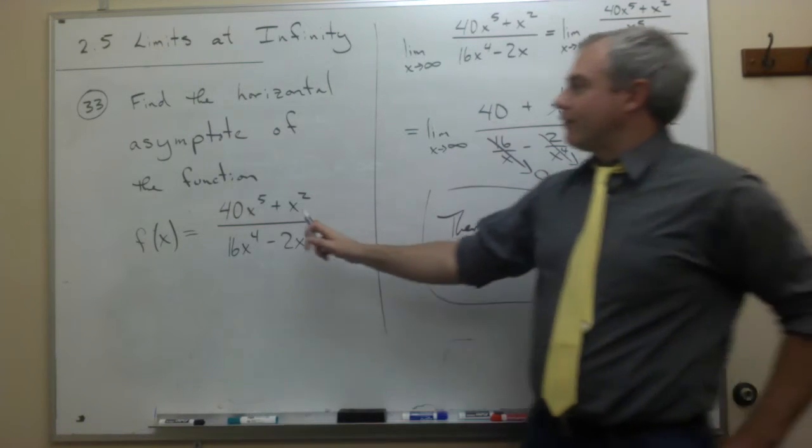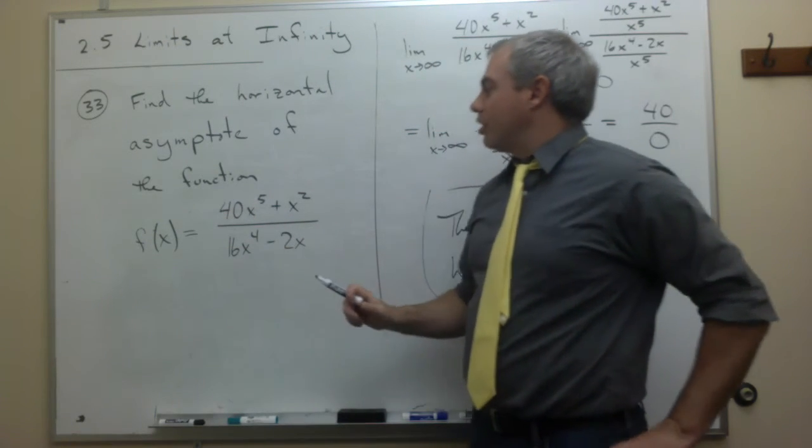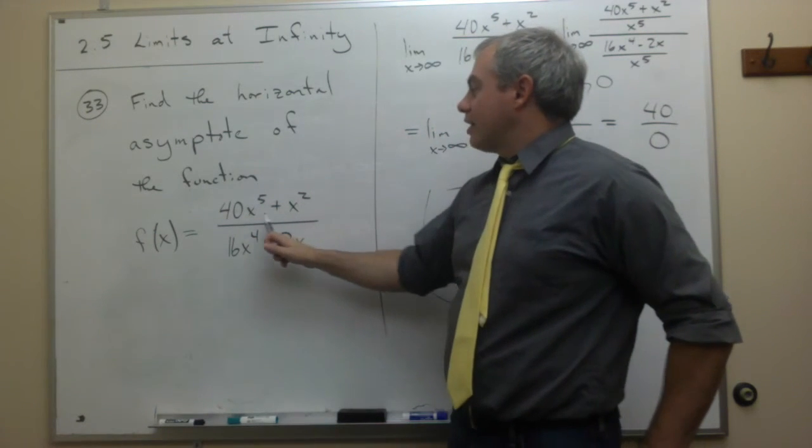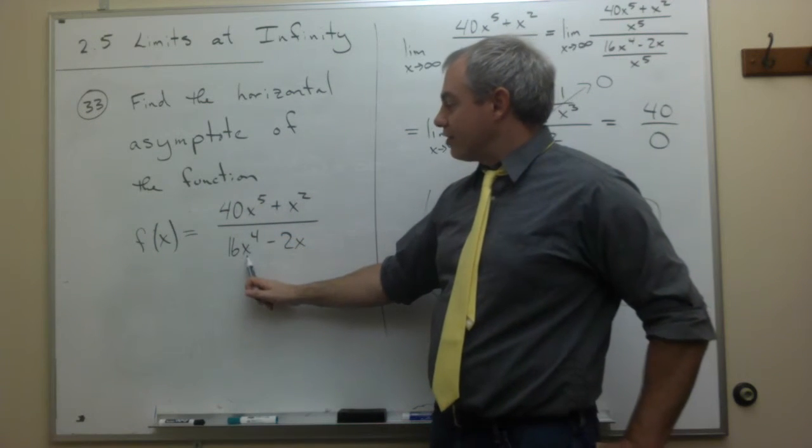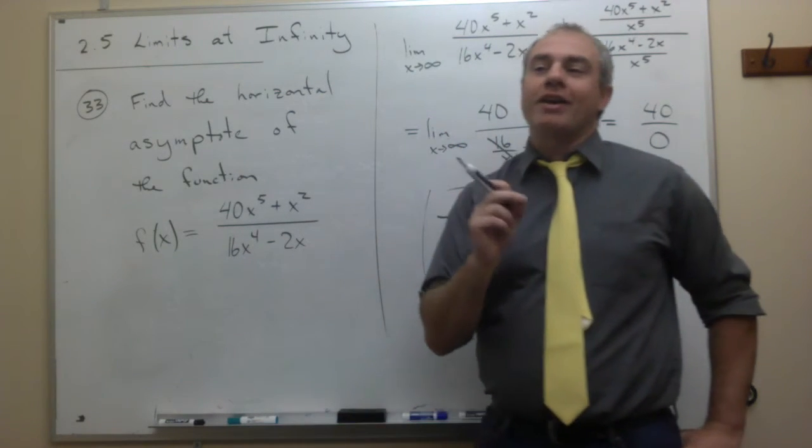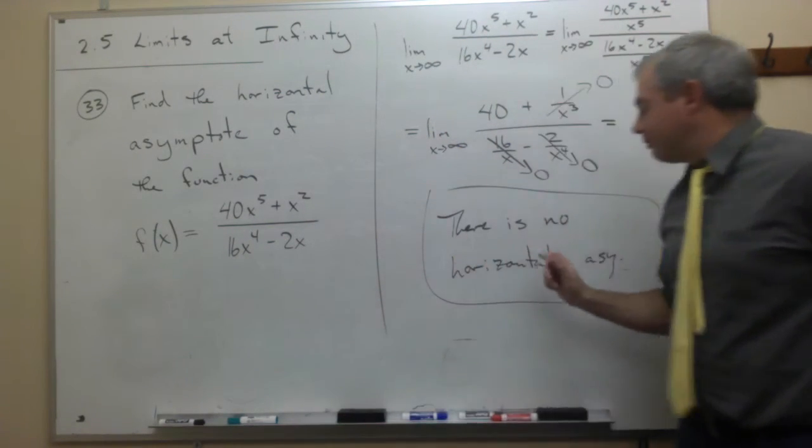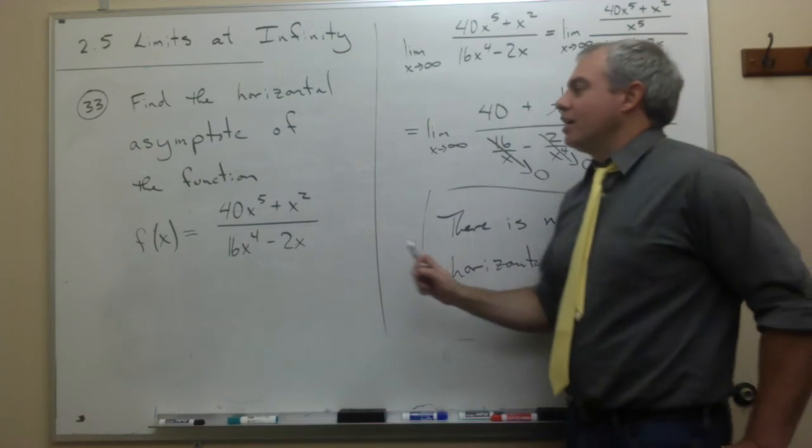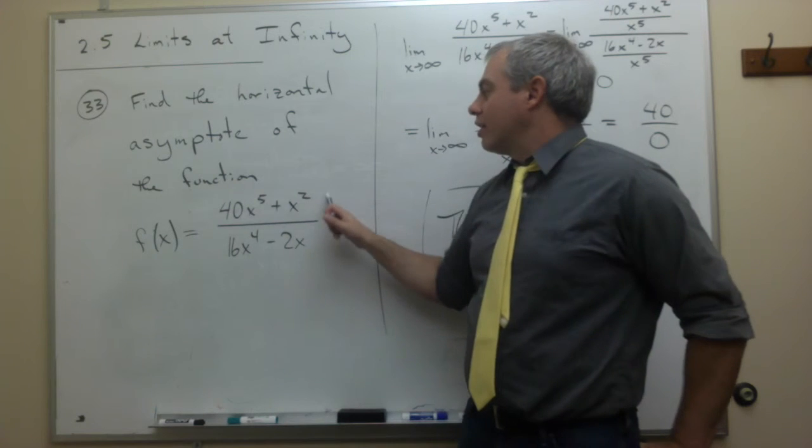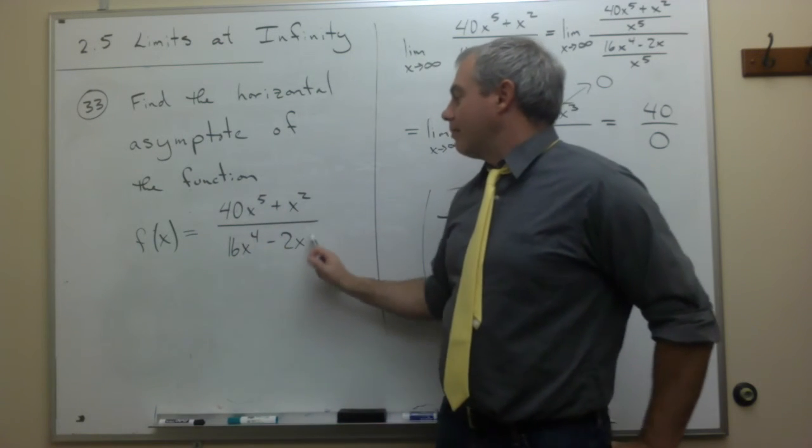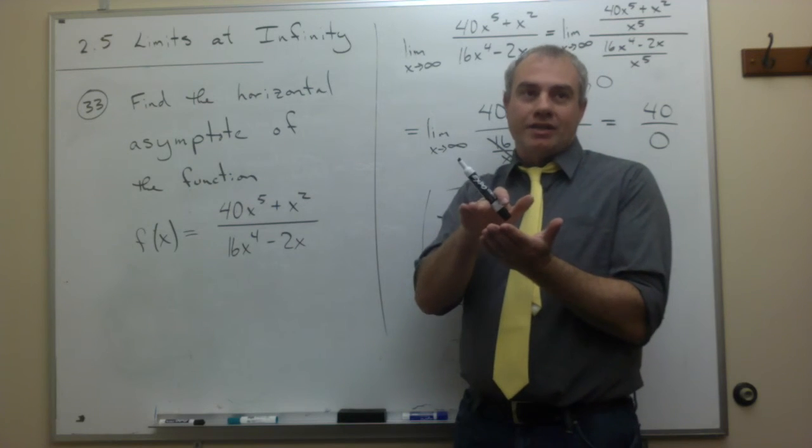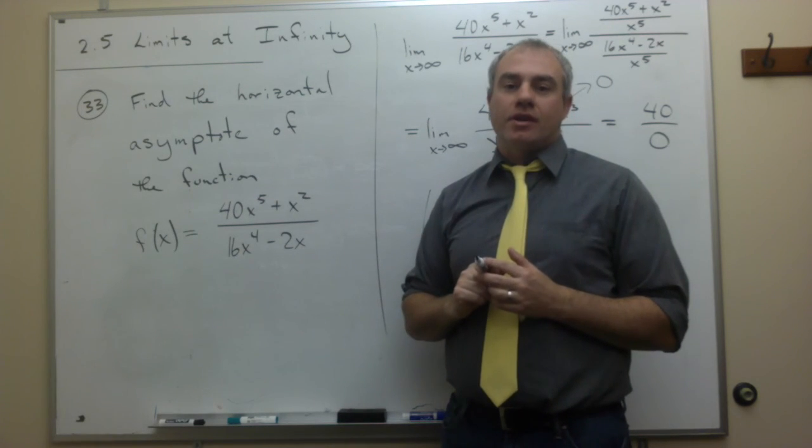And actually, by looking at the very first part of this, you notice that the power of x on top, the highest power of x on top is bigger than the highest power of x on the bottom. And what that tells me right off the bat is there's not going to be a horizontal asymptote. It's kind of like the numerator is getting bigger much faster than the denominator. And so we can't move towards a point as we go out towards infinity. We'll see you next time.